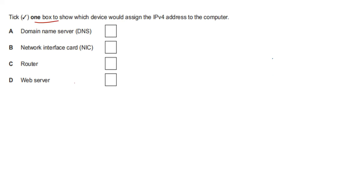Tick one box to show which device would assign the IPv4 address to the computer. Option A: domain name server — no. Option B: network interface card — no. Option C: router — yes, that is correct. Option D: web server — also incorrect. The correct answer is C, router.